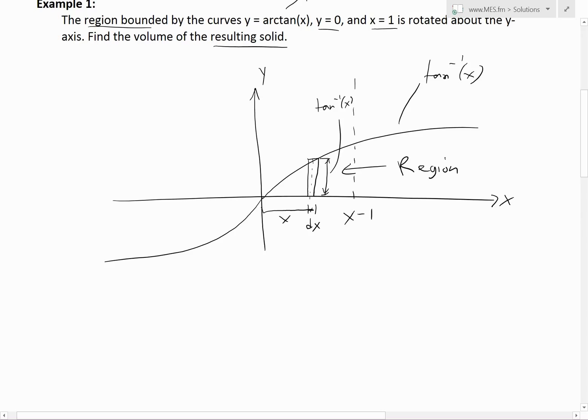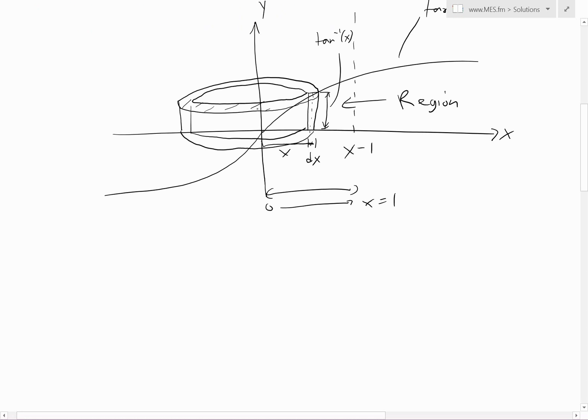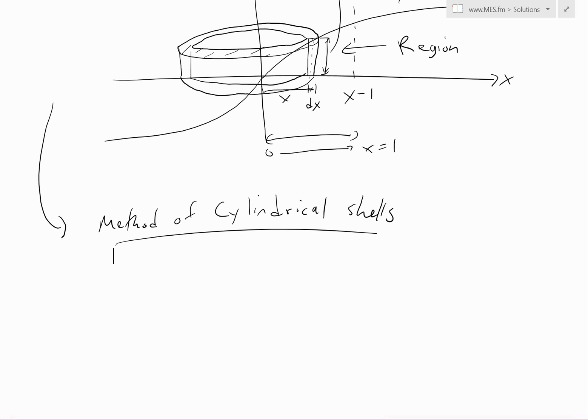The height right here is inverse tan of x, and when we rotate it about this y-axis we get basically a cylindrical shell like this. That's the volume of one of them, and we sum up from 0 to x = 1.